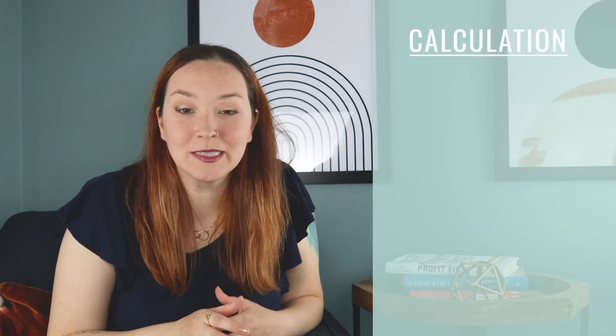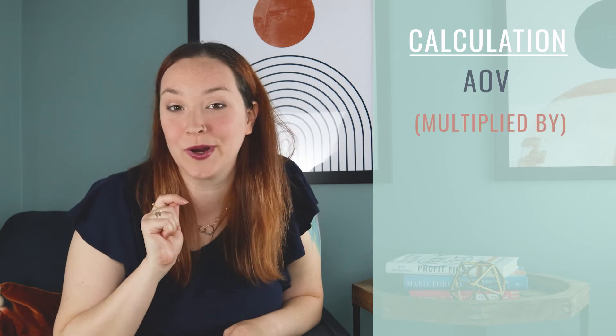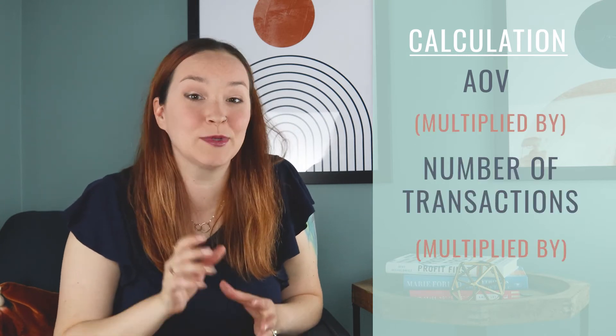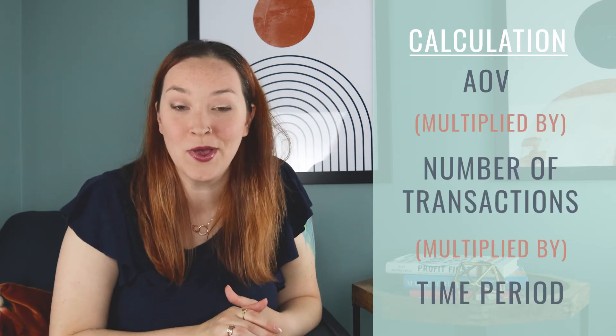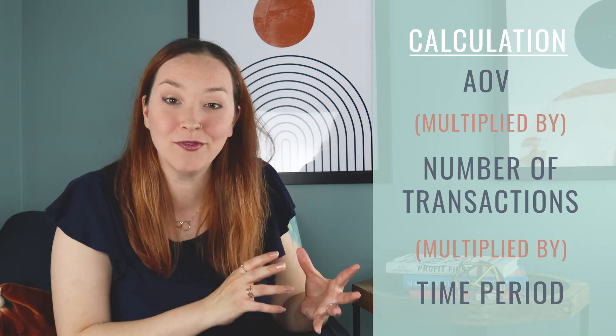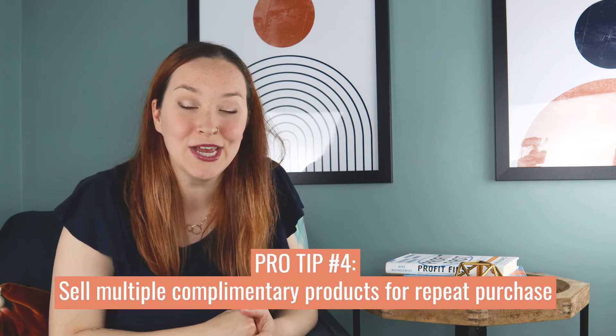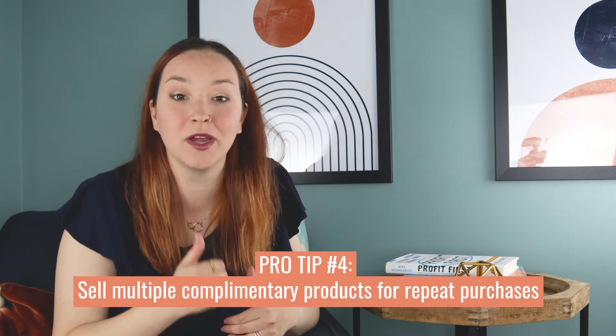You calculate Customer Lifetime Value by multiplying your average order value times your number of transactions times a given time period. So over a year, what is your average order value and how many transactions do you think that customer is going to make on your store? This is where it's really beneficial to have multiple complementary products so people can come back and purchase again and again, or a consumable product like a skincare item that runs out after about three months, prompting them to return.